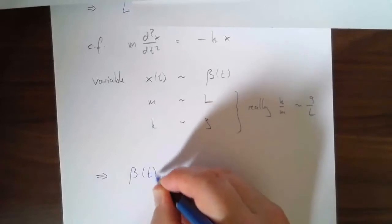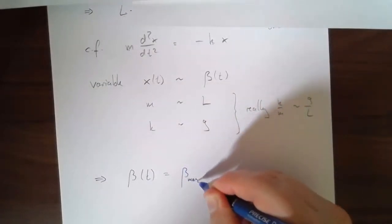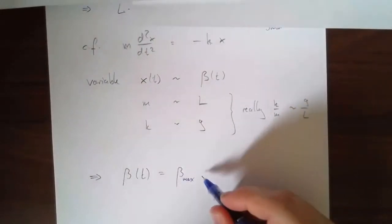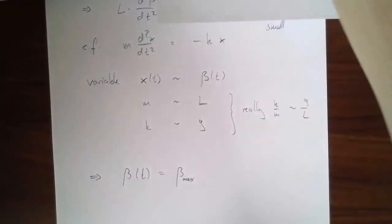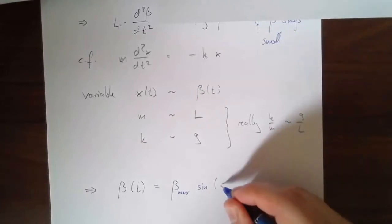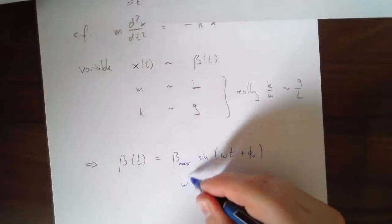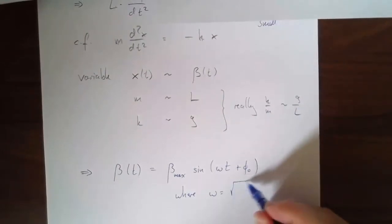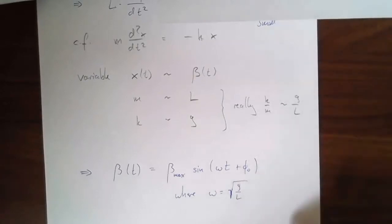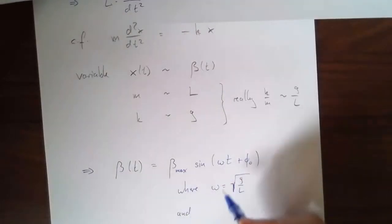So we know what the answer is. The answer is going to be that the angle as a function of time is some constant that was the amplitude. Let's call it the maximum angle we're going to get. That is how far does this thing swing out, like where does it stop before it swings back, times the sine of omega t plus phi naught, where omega is equal to what? Square root of k over m. That's what is for the spring. So in our case it has to be the square root of g over l just by analogy.